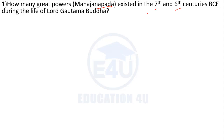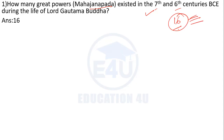The total number of Mahajanapadas will be discussed further in class. There were 16 Mahajanapadas in total. Different dynasties ruled under them, and these dynasties ruled various regions of north India. They are known as Mahajanapadas.